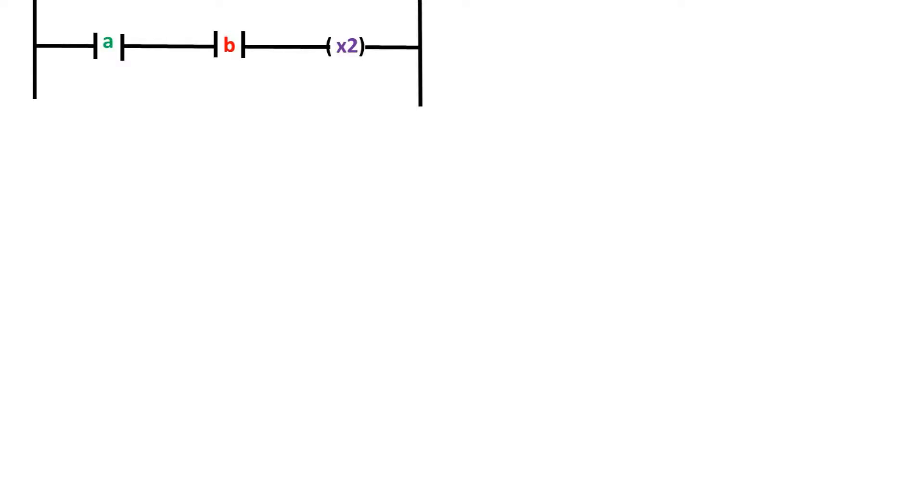So to start off the video, let's take a look at two normally open contacts and one normally off coil. The first input contact will represent a start button, and this will be designated with the letter A.